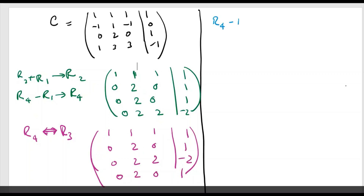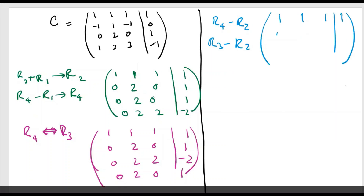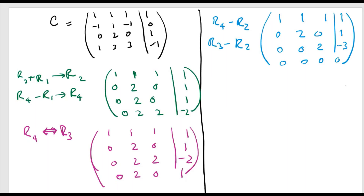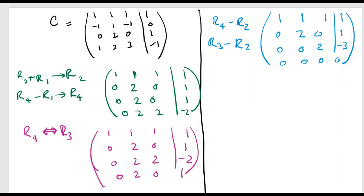We then subtract the second row from the third and the fourth rows to place a zero row at the fourth position. This gives us a zero row at the fourth place with all elements below all pivots equal to zero, so we have obtained the echelon form.